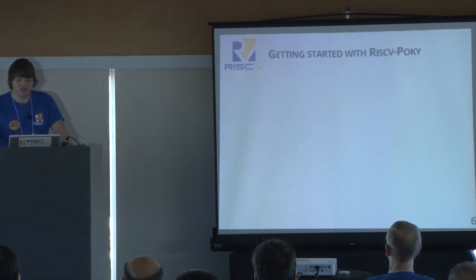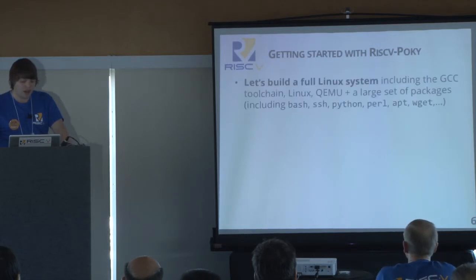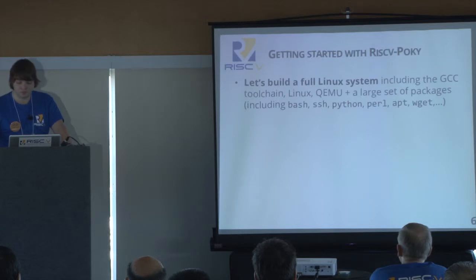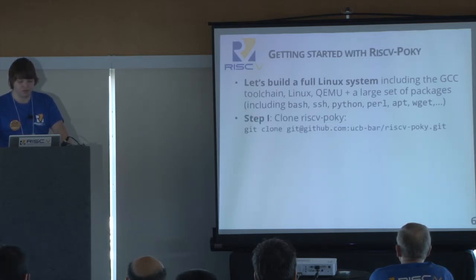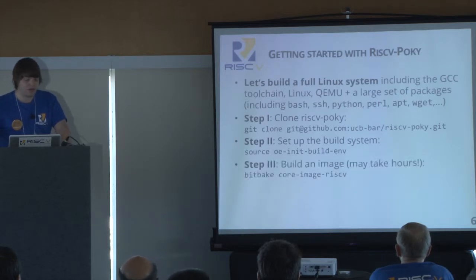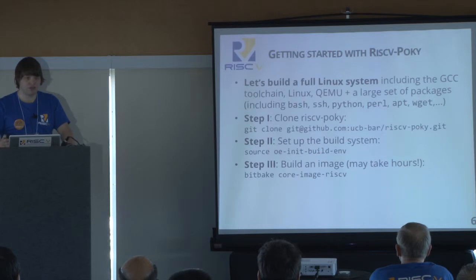I want to give a brief introduction of how to get started using Pokey, and to do so I want to show you how to build a full Linux system. You start off with a system that has nothing installed but a normal Linux distribution, and you want to build the GCC toolchain, Linux, RISC-V, QEMU, and a large set of packages including SSH, Python, Perl, etc. You first clone the RISC-V Pokey repository, then go into that directory and call one file to initialize the build environment, and then just invoke BitBake to build the default set of packages.